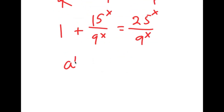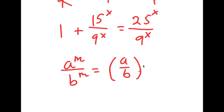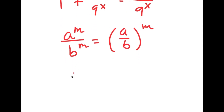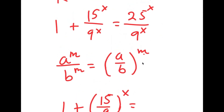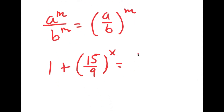Now, if I have something in the form a to the power of m over b to the power of m, this is the same thing as a over b to the power of m. So 15 to the power of x over 9 to the power of x equals 15 over 9 to the power of x. And 25 to the power of x over 9 to the power of x equals 25 over 9 to the power of x.